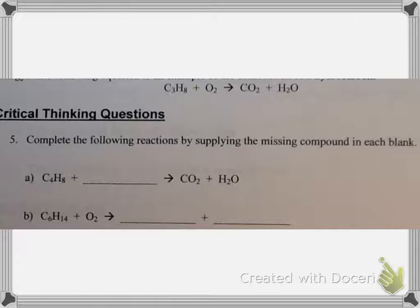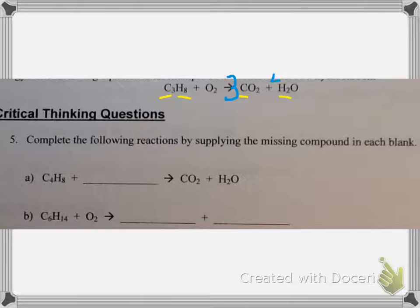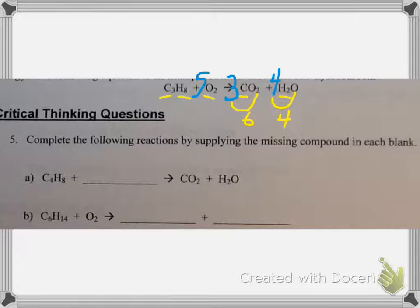Combustion reactions: another type of reaction is a combustion reaction. During combustion, a hydrocarbon reacts with oxygen. The products for complete combustion are always water, carbon dioxide, and energy. The following equation is an example of the combustion of a hydrocarbon. We have three carbons and one carbon, so a coefficient of three in front of CO2. We have eight hydrogens and two hydrogens, so a coefficient of four in front of water. That gives us six plus four equals ten oxygens, so a coefficient of five in front of O2.